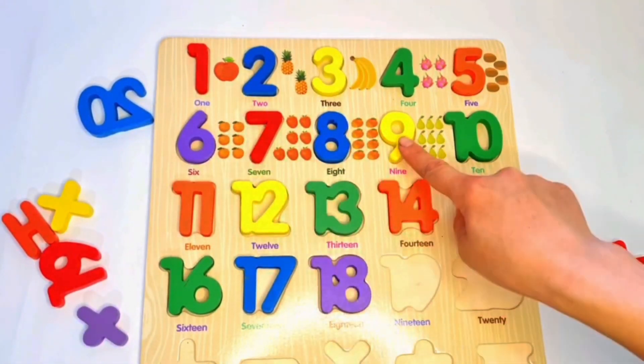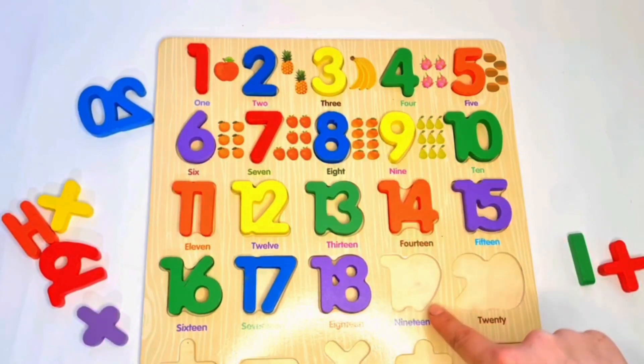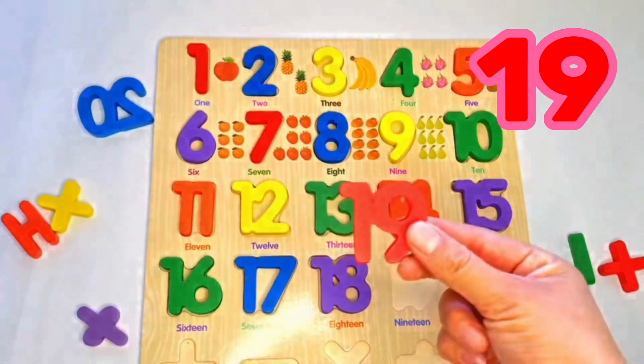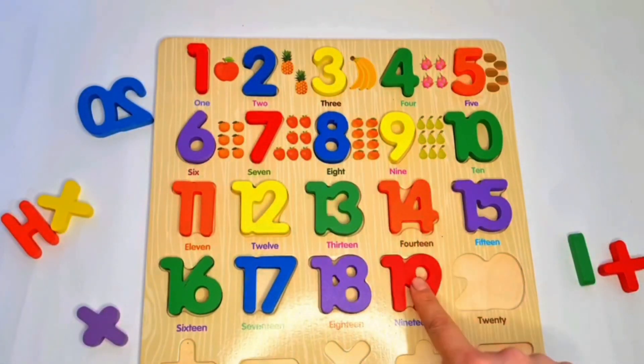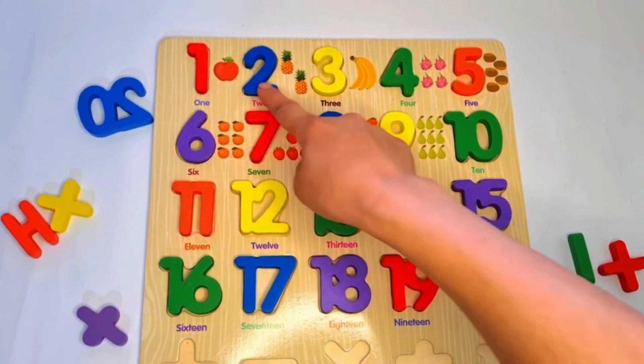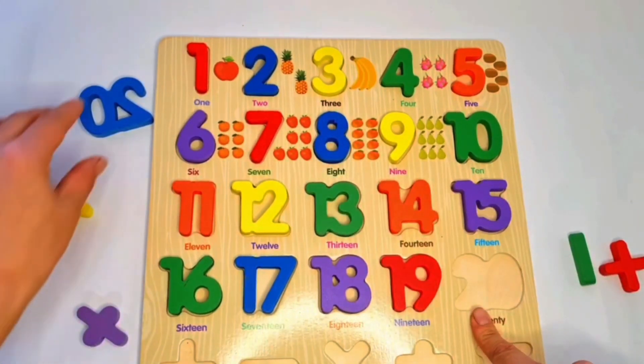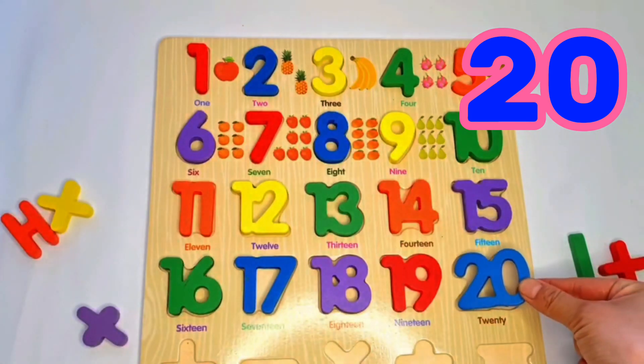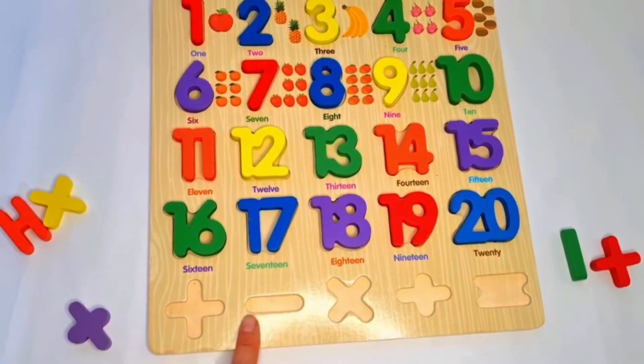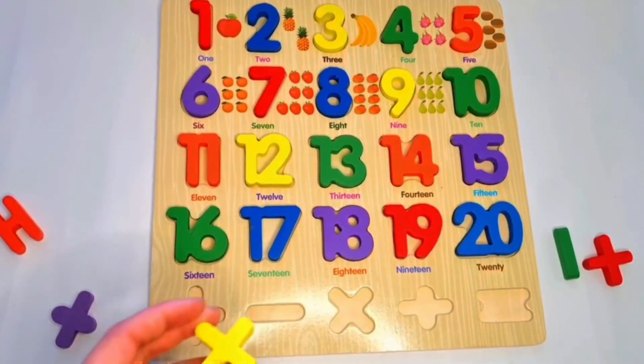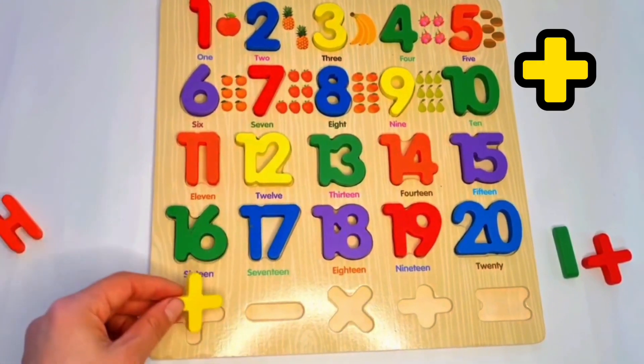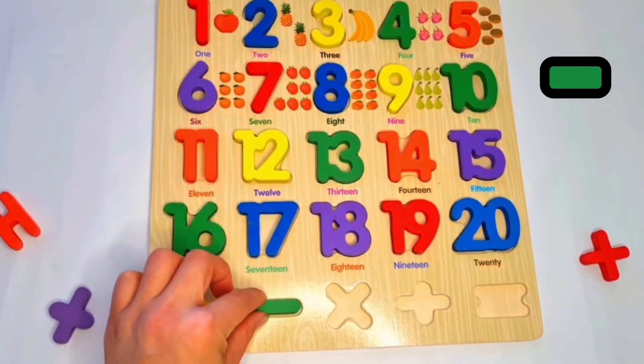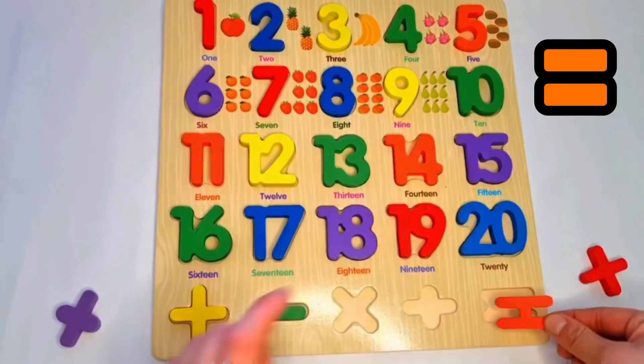One and nine together, nineteen. Red nineteen. Then two and zero together, twenty. Yeah. Next, our math symbols: here plus and minus, equal.